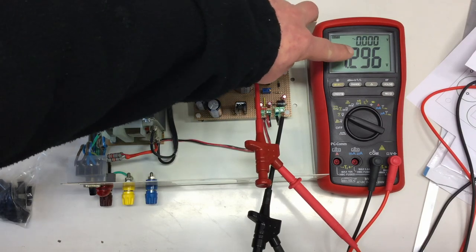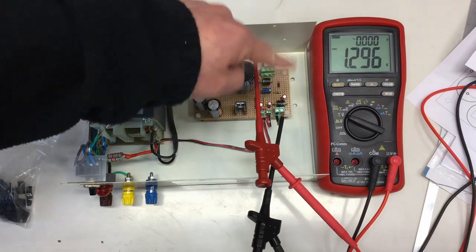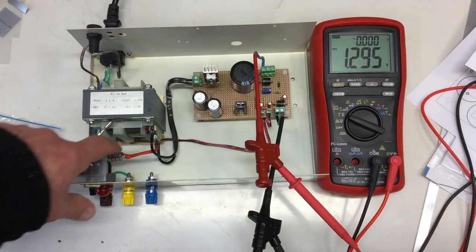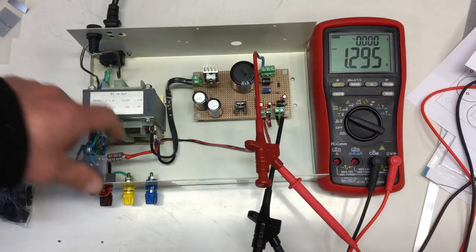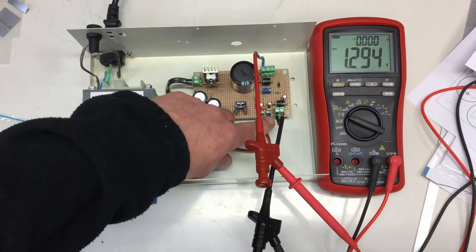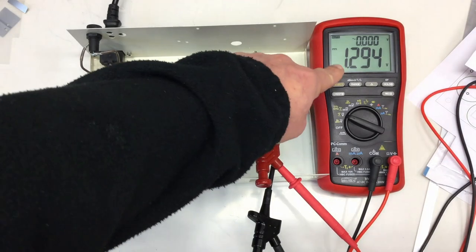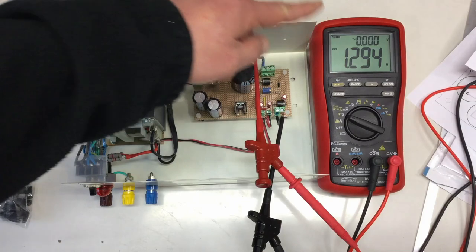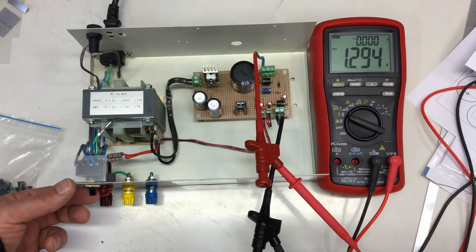We still have 1.2 volts in the main filter cap, probably from measuring the diodes. Our power indicator is in and connected to its screw terminal, hopefully the right way around. If I now hit the power button, we should see a reasonable voltage with not too much ripple, no smoke, and the indicator light going on.